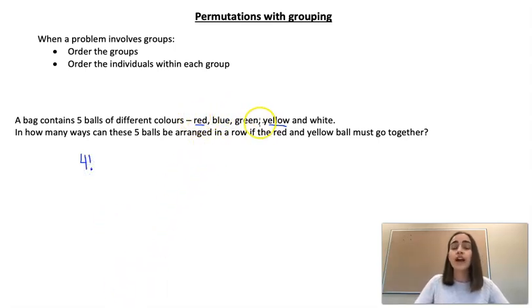Then we need to say okay, well our red and yellow, if we just look at our red and yellow we can put them together, we can arrange them in 2! different ways. And then we're going to multiply those two answers together and we would end up with 48 different ways we can arrange them, assuming that we have to keep the red and yellow together.